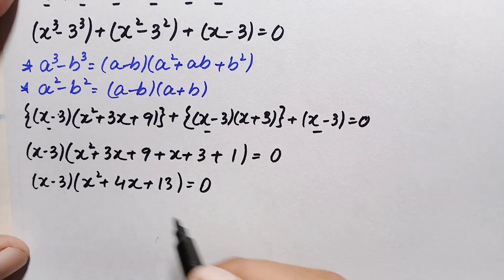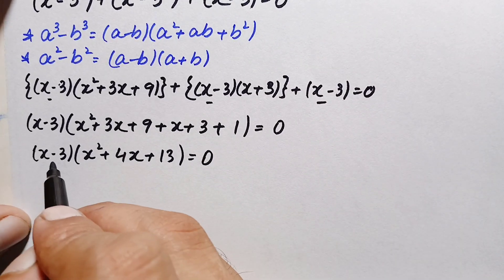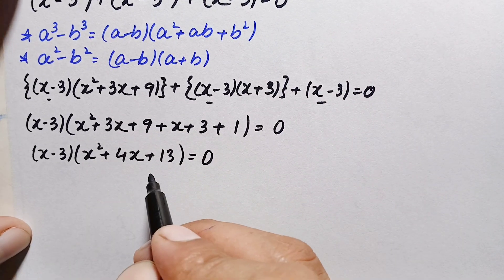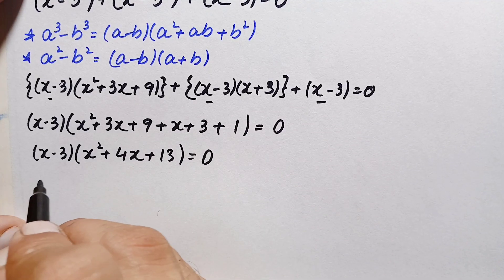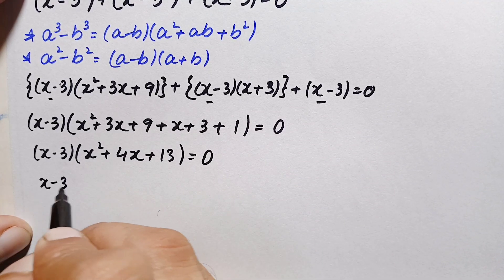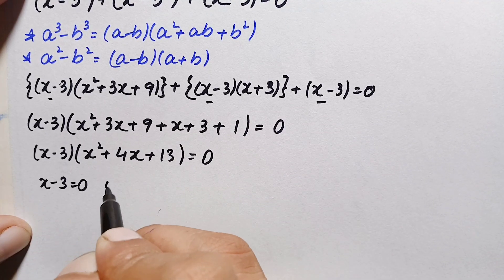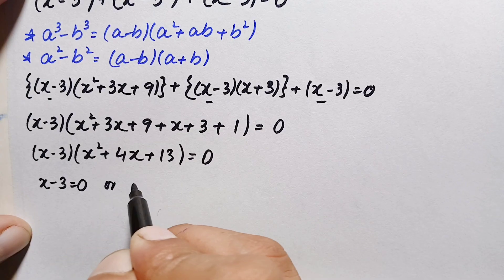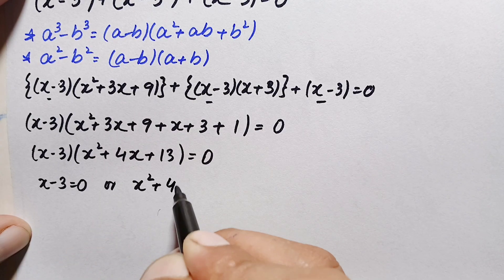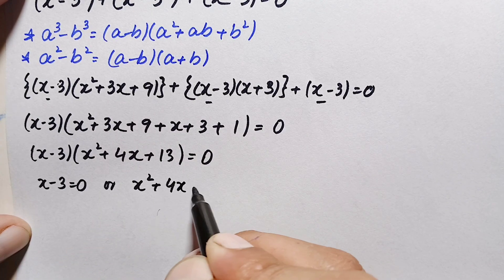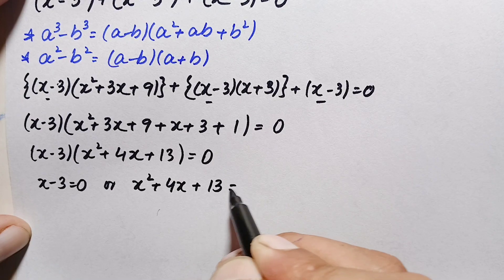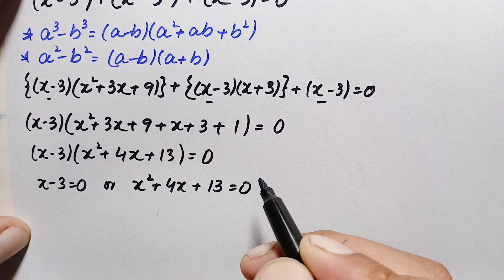Since the product of these two expressions equals zero, either one or the other must be zero. So either x minus 3 equals 0, or x squared plus 4x plus 13 equals 0.